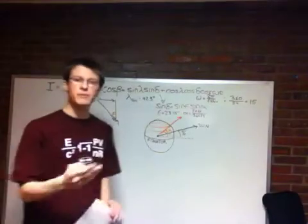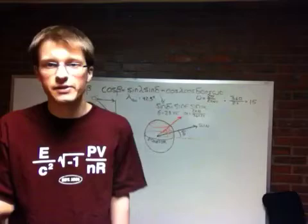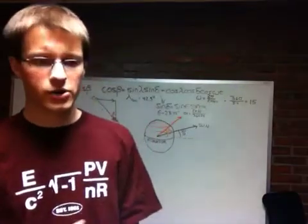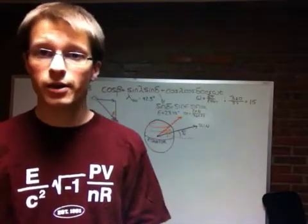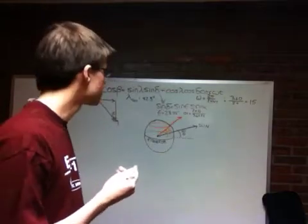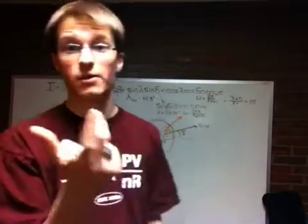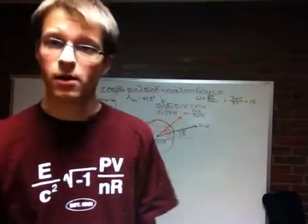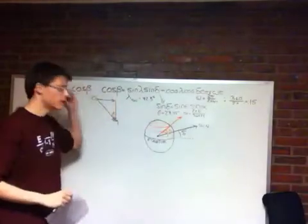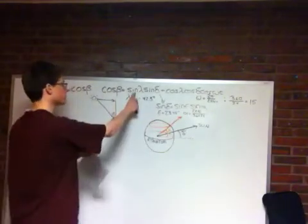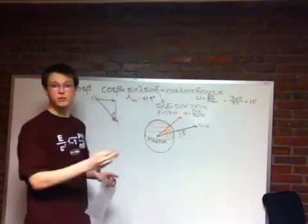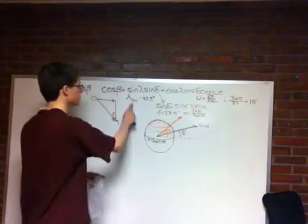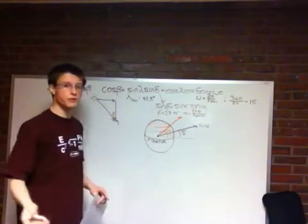You can probably figure out just a few things that it will vary depending on. It should be a function of what latitude you're at, it should be a function of the tilt of the earth's axis, and it should be a function of the time of year. So, we look at, that's actually the case. Cosine of beta is going to be equal to sine of latitude, which is latitude, we're using lambda, and we're going to use the latitude of Boston, which is 42.3 degrees, times the sine of delta.